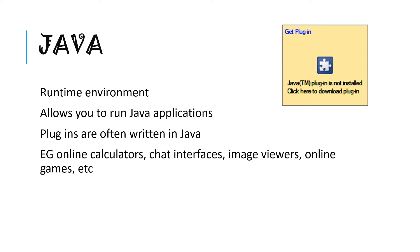The Java plugin is called a runtime environment and it allows you to run Java applications inside your browser. Plugins are also often written in Java. Some examples of little interactive elements that need the Java plugin are online calculators, chat interfaces, image viewers, and online games. So if you do not have the Java plugin, you won't be able to use those features.